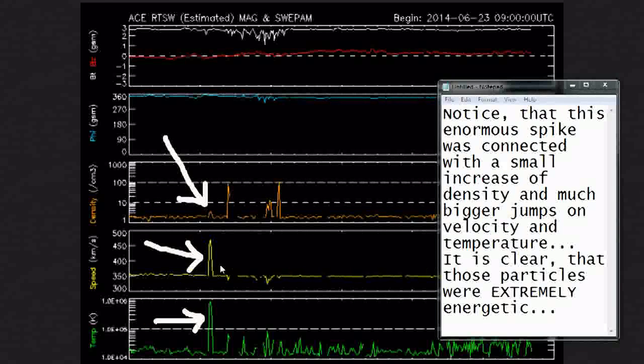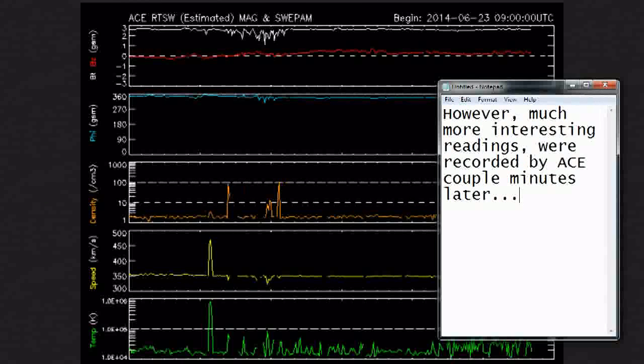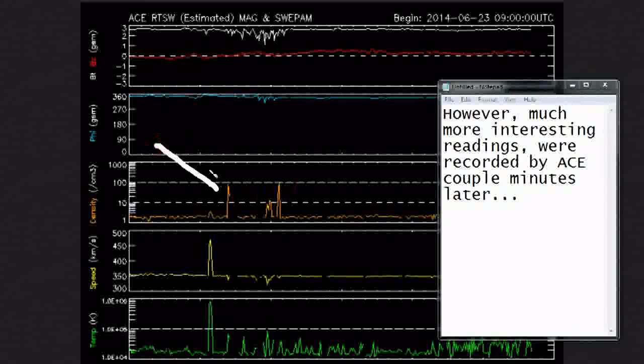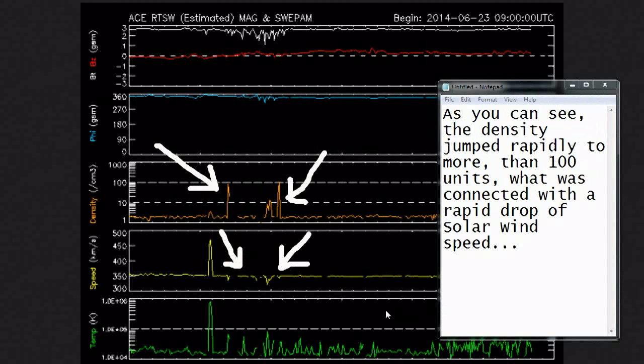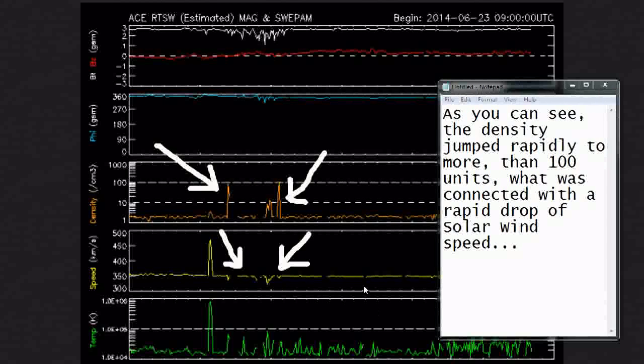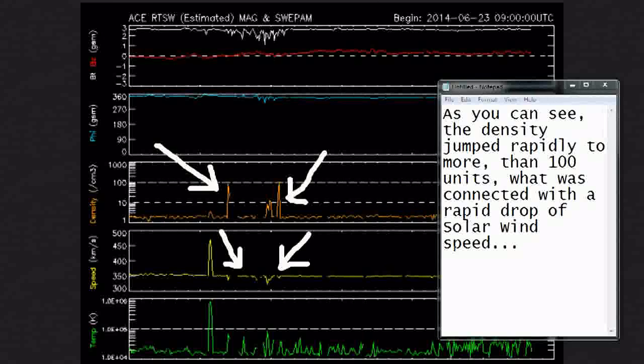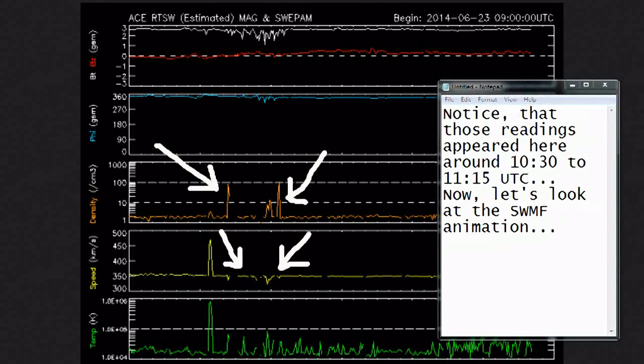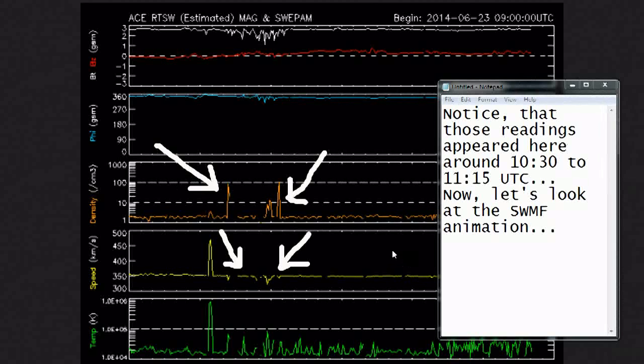It is clear that those particles were extremely energetic. However, much more interesting readings were recorded by ACE couple minutes later. As you can see, the density jumped rapidly to more than 100 units, what was connected with a rapid drop of solar wind speed. Notice that those readings appeared here around half past 10 to 11:15 UTC.